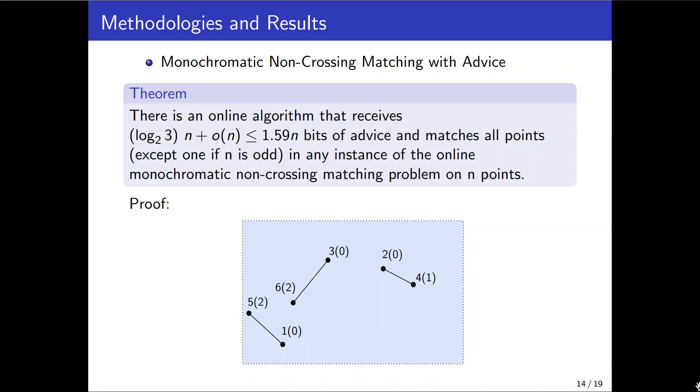So once it arrives we leave it unmatched for future. While 1 indicates its partner has come before and located on its left. So x is going to match with the rightmost point on its left. And similarly if the advice is 2 we matched x with the leftmost unmatched point but on its right.